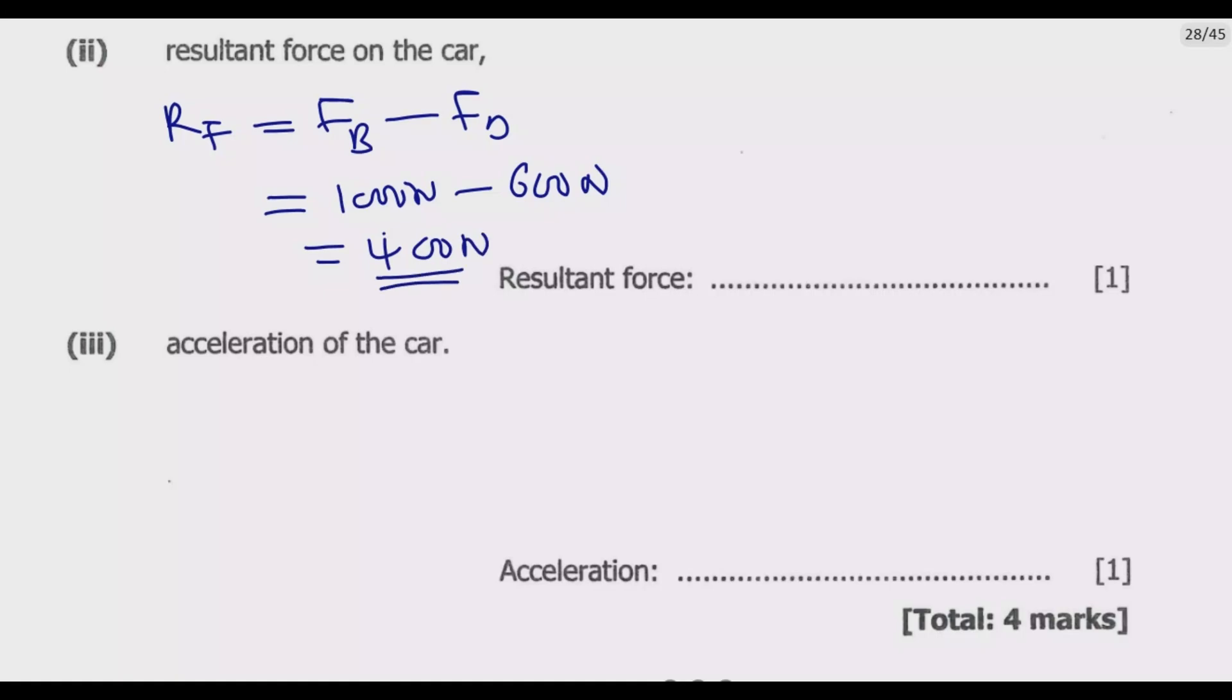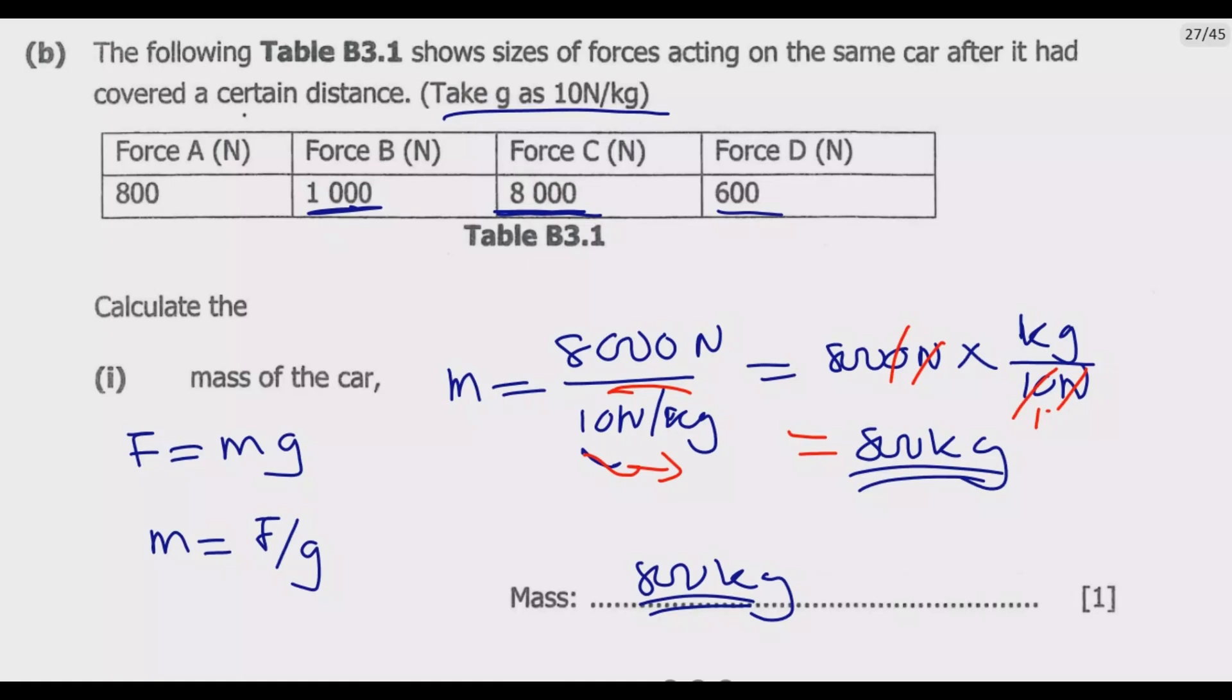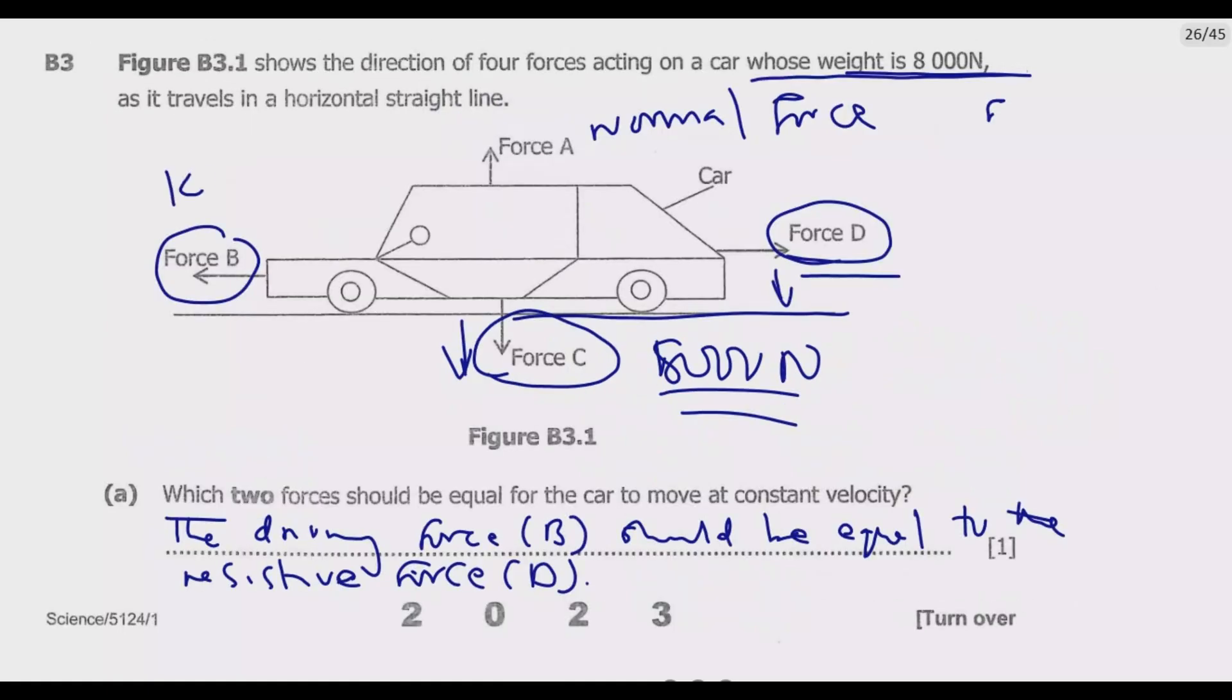So 400 newtons is the resultant force because the force which is pulling forward, which is 1000, is greater than this one which is pulling in the opposite direction, which is just 600. So overall we are going to have 400 newtons which will be pulling in this direction because this one would overcome the 600. That's the principle that we are using to find the resultant force.